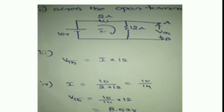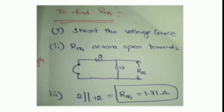V_Thevenin is equal to current multiplied by 12, and current is equal to 10 divided by 14. Finally, V_Thevenin is equal to 8.57V. Next, to find R_Thevenin: the voltage source should be short-circuited and the current source should be open-circuited. Then R_Thevenin is calculated — both resistors are connected in parallel — giving R_Thevenin equal to 1.71 ohms.